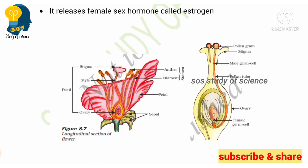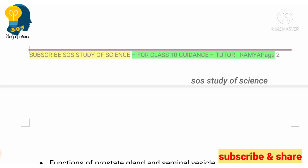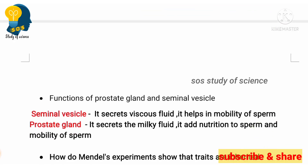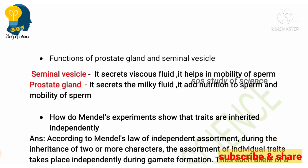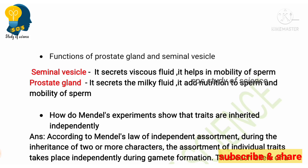Next, there will definitely be one diagram question. The longitudinal section of a flower and germination of pollen on stigma — both these diagrams must be practiced. Look at all the labels carefully and practice them. These two diagrams will easily fetch you two marks.